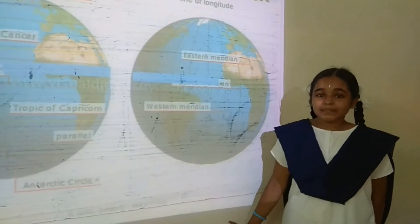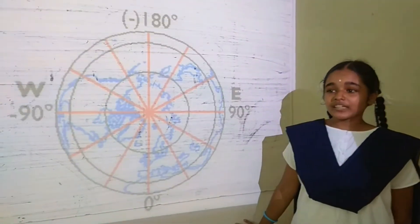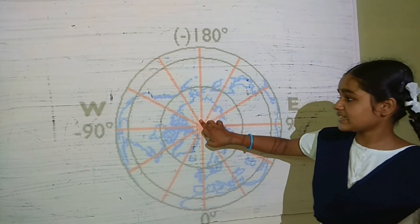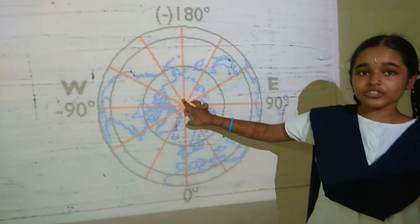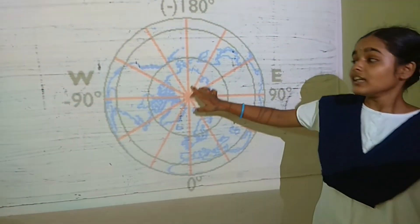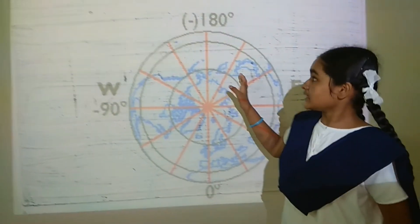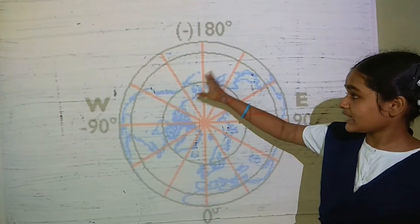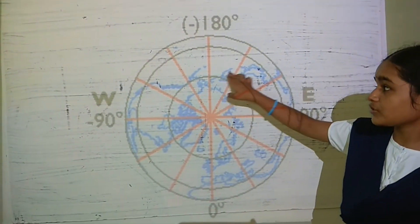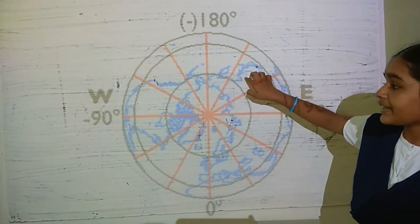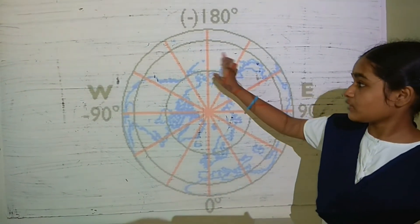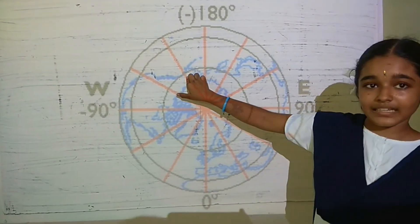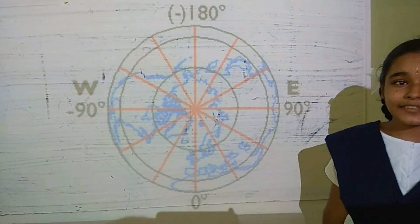Now I am explaining about the International Date Line. The 180 degrees east and west longitude is called the International Date Line. When we cross this 180 degrees longitude from west to east, we add one day. When we cross this 180 degrees longitude from east to west, we subtract one day.